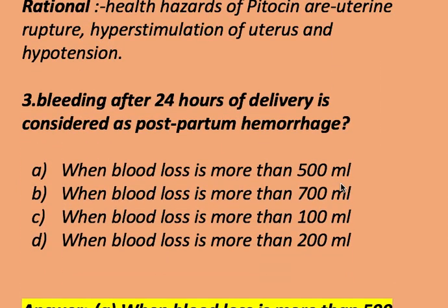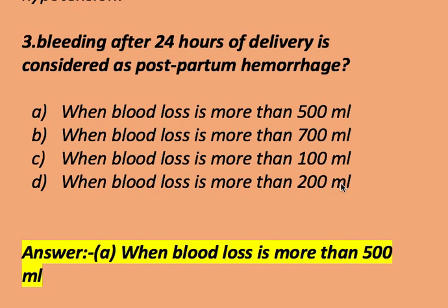Bleeding after 24 hours of delivery is considered as postpartum hemorrhage when blood loss is more than 500 ml, more than 700 ml, more than 100 ml, or more than 200 ml. The right answer is when blood loss is more than 500 ml.